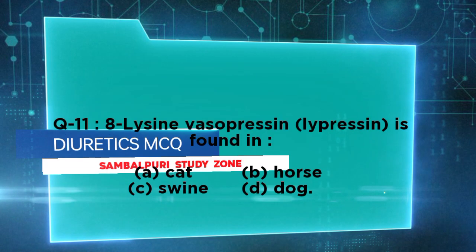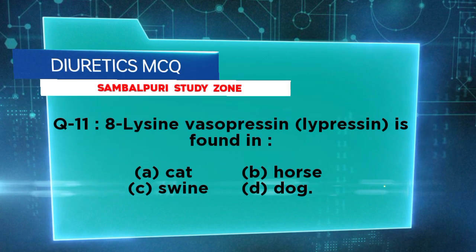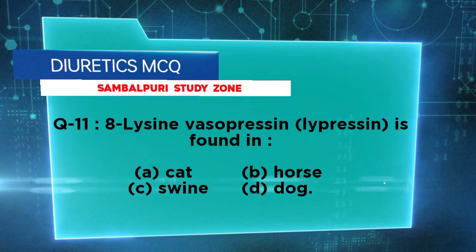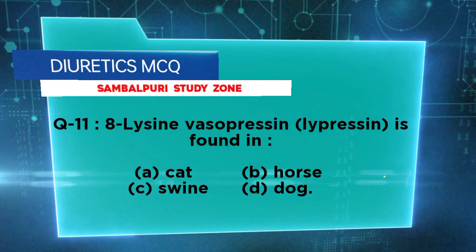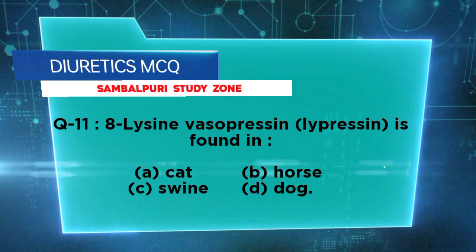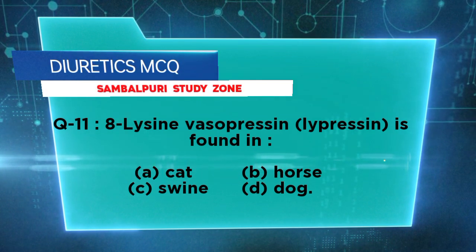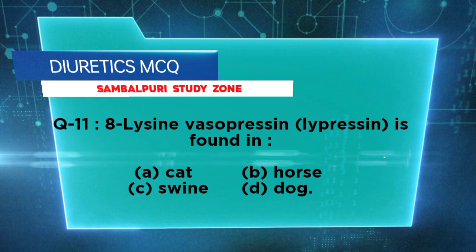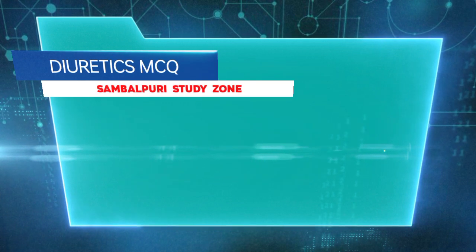8-lysine vasopressin is found in which animal? Options: cat, horse, swine, duck. The right answer is swine.